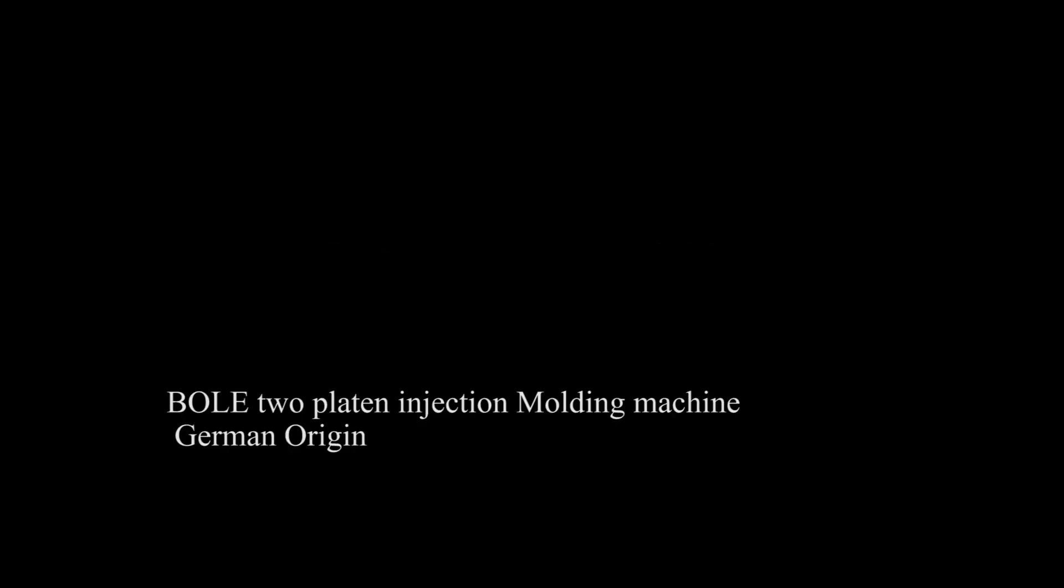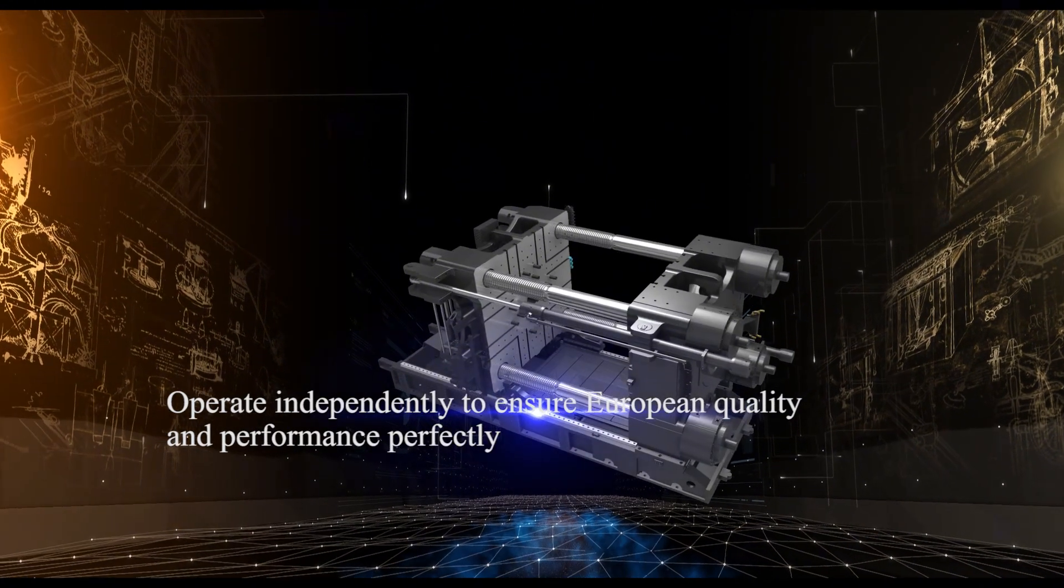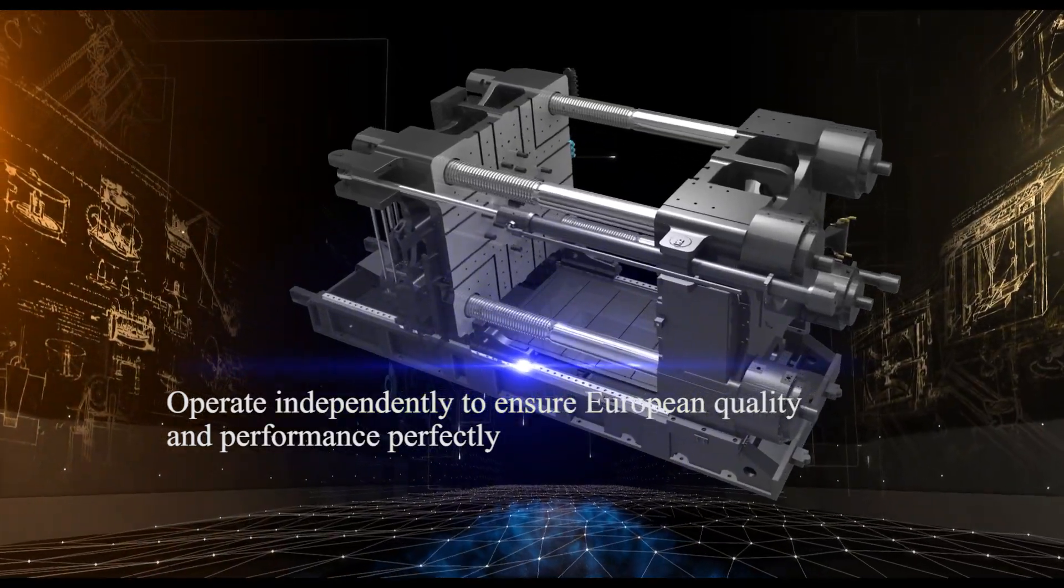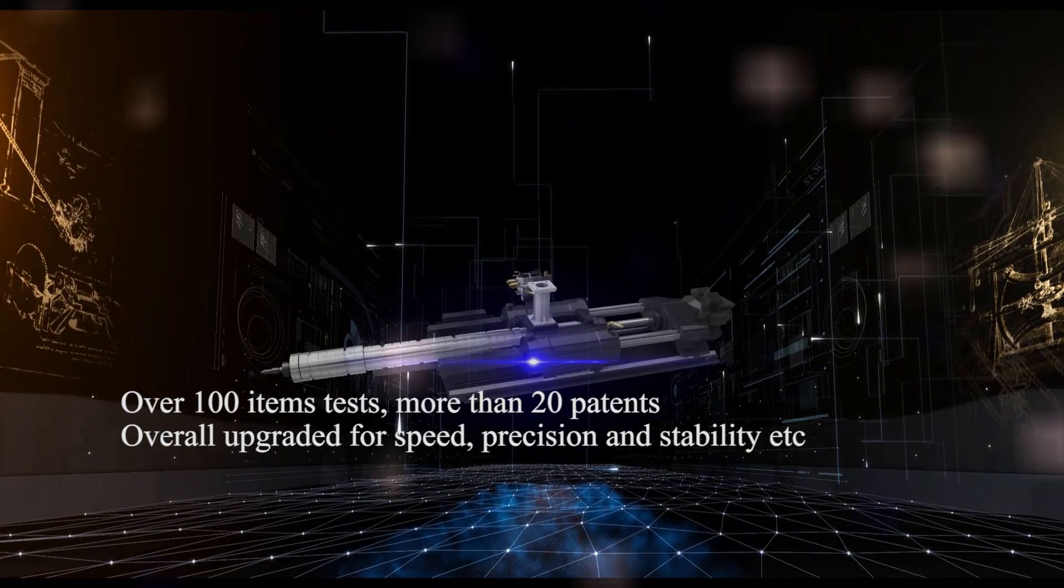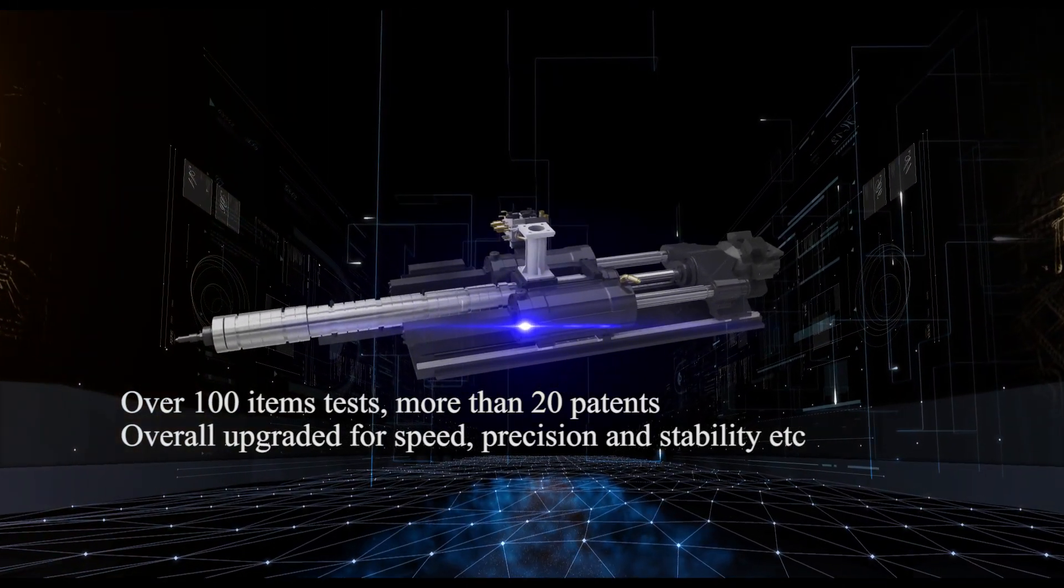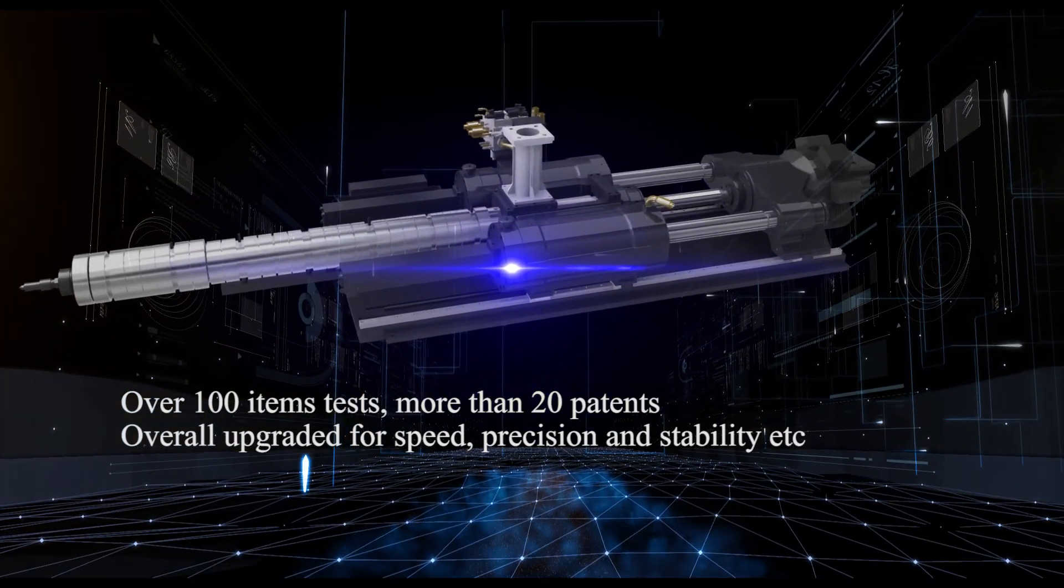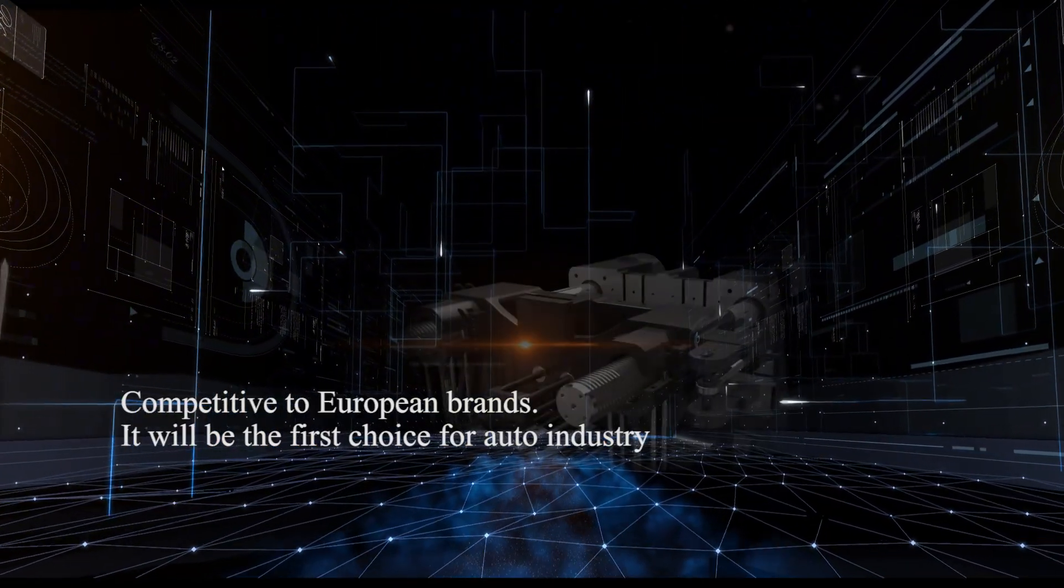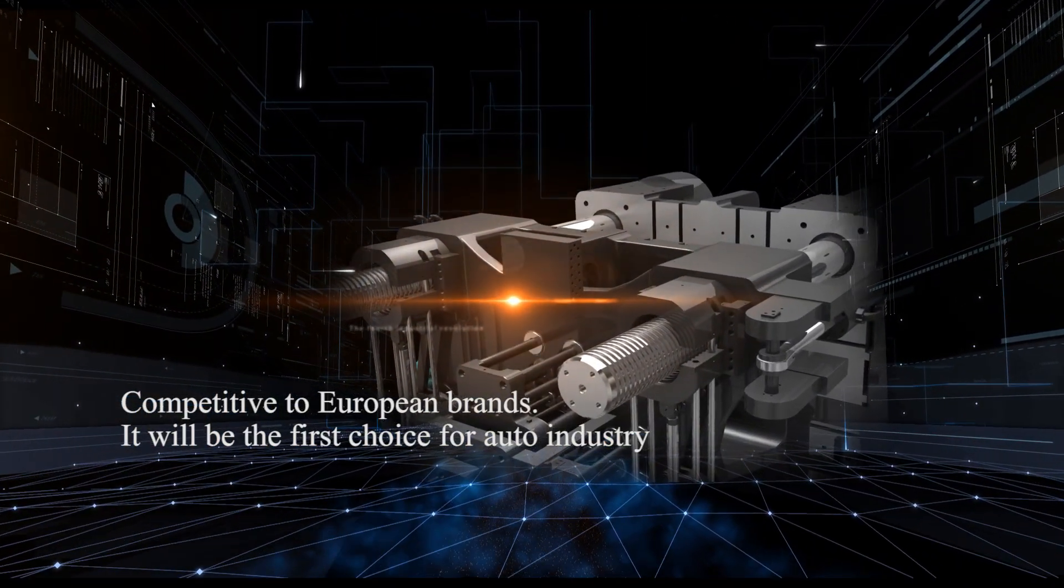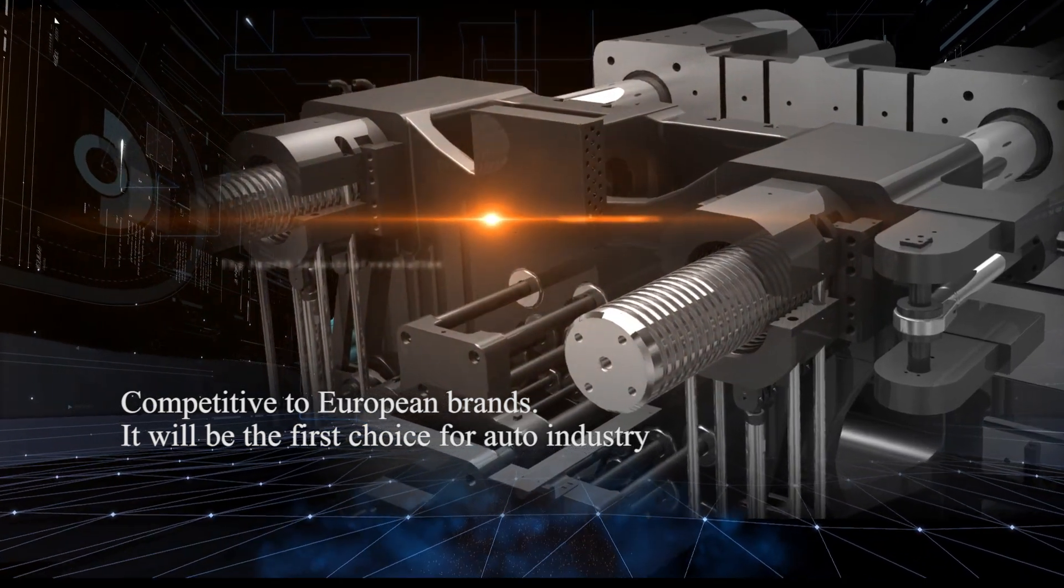Tie bar clamping nuts shaking. Buhler two-platen injection molding machine, German origin, operates independently to ensure European quality and performance. Tested over 100 items, more than 20 pallets. Overall upgraded for speed, precision, and stability. Competitive to European brands, it will be the first choice for auto industry.